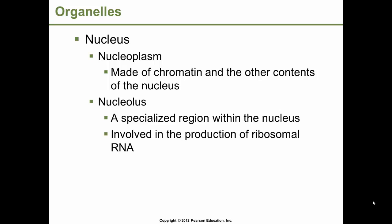The nucleoplasm is made of chromatin and the other contents of the nucleus. As previously mentioned, the nucleolus is the specialized region within the nucleus involved in the production of ribosomal RNA.